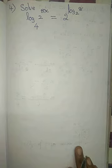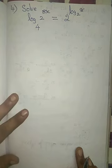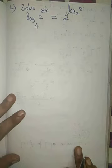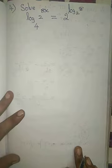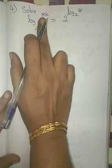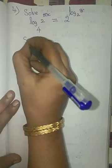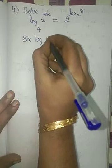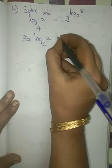Exercise 2.12, fourth question: log 2 to the power 8x to the base 4 equals 2 to the power log 8 to the base 2. In that, using the power rule, bring the 8x down. So you will have 8x times log 2 to the base 4.